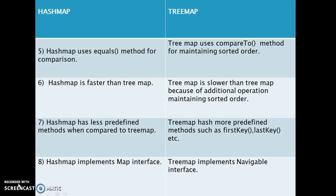Next, HashMap has fewer predefined methods when compared to TreeMap. TreeMap has more predefined methods such as firstKey(), lastKey(), etc.